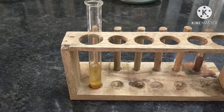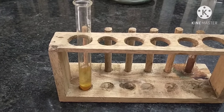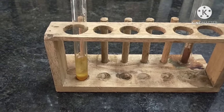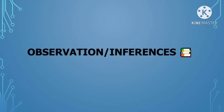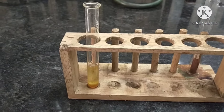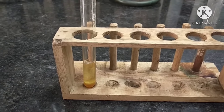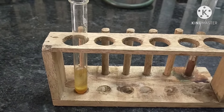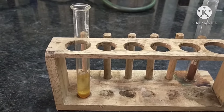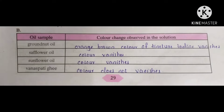Observe whether the original colour of the iodine solution disappears or not. In groundnut oil, the iodine solution retains its colour, so the colour does not change. However, if we use sunflower oil, the iodine solution colour vanishes. For vanaspati ghee, the iodine solution colour does not vanish.